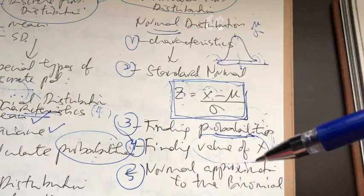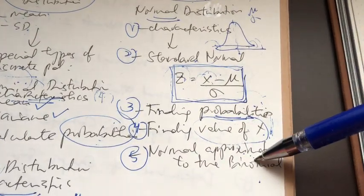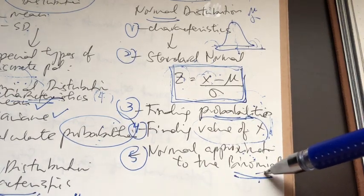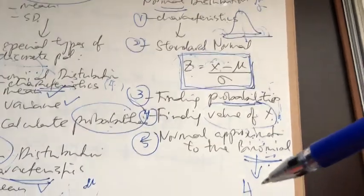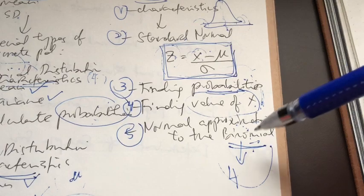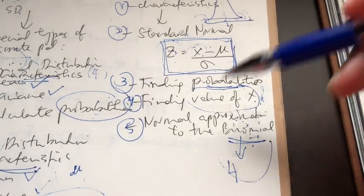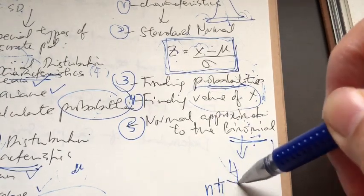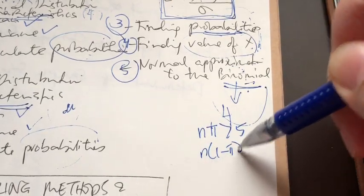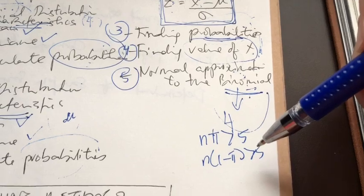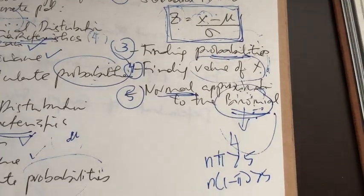Finally, we also learned the normal approximation to the binomial. This applies to a binomial question — you need to identify the four characteristics first to confirm it is binomial. But since it meets the conditions of a very large sample size — specifically n times pi greater than 5, and n times (1 minus pi) greater than 5 — when these two conditions are met, we can use the normal distribution to solve the binomial question.